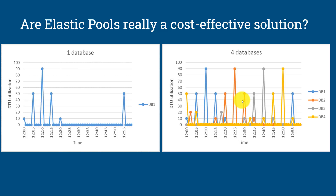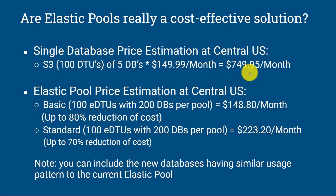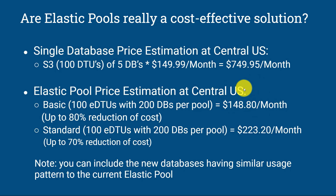So let's understand how much cost we can save. In a single database deployment model, I have deployed five databases with a cost of $149 per month per database, so the total cost would be $749 to deploy five databases. Now if I convert this single database deployment model to an elastic pool database model with the same resources, the cost would be $148 — an 80% cost reduction — with the basic tier.